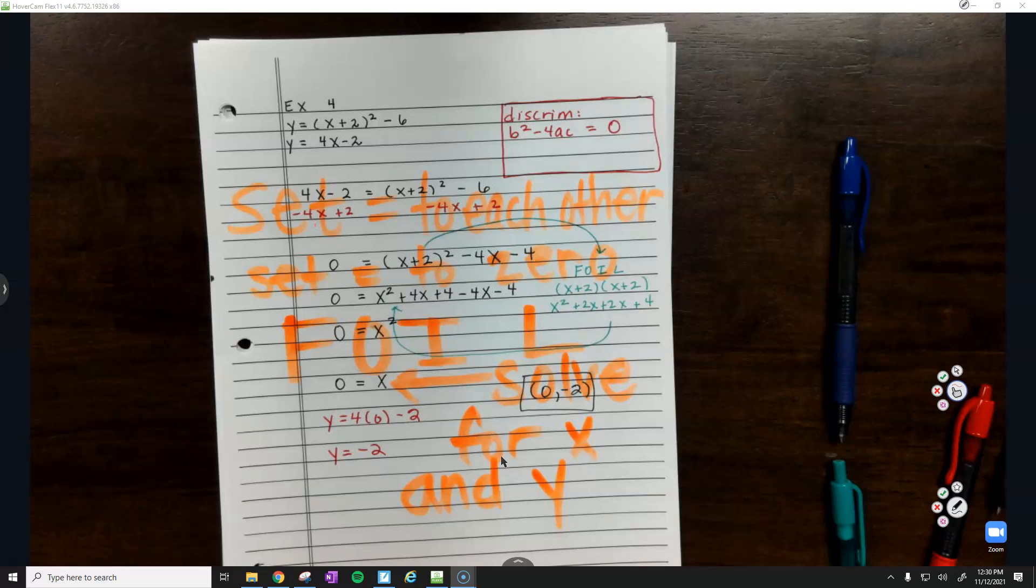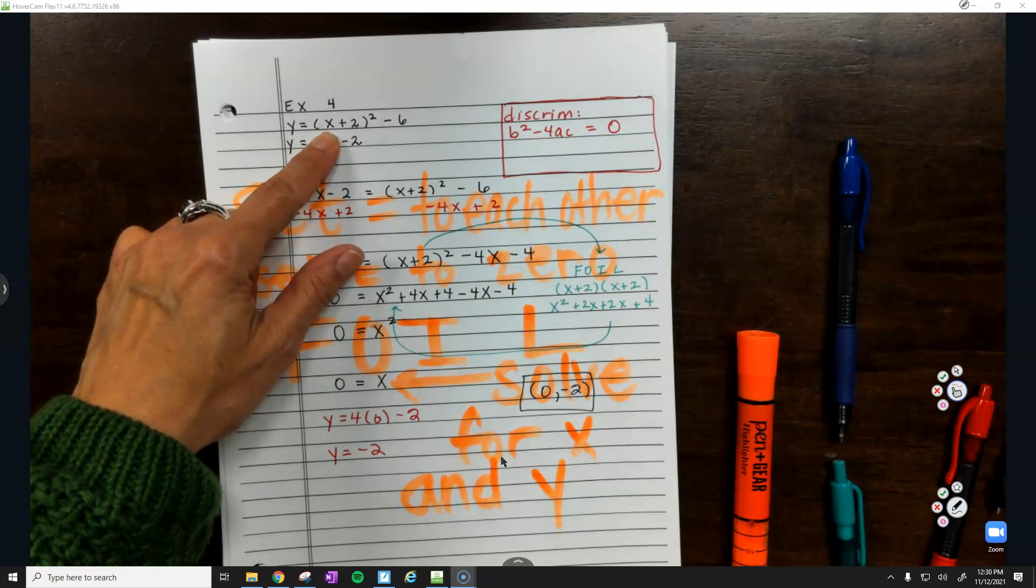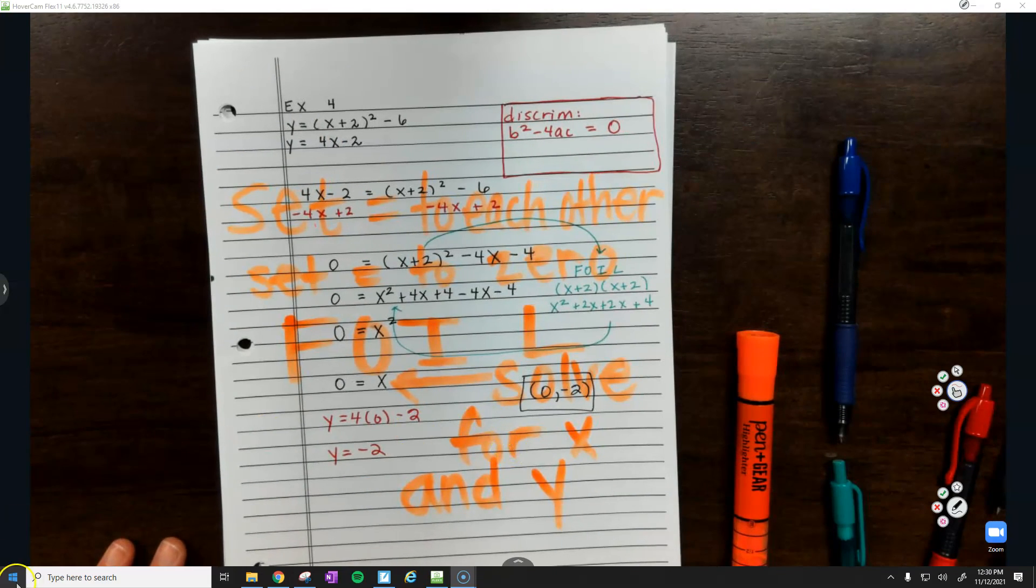Why did I FOIL? You tell me. Too many x's. And that x is trapped inside what? Parentheses. You couldn't get it out unless you squared it.